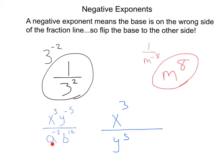In the denominator, we have a to the negative 2. That's a negative exponent, so we'll flip it and change it to positive. And we have b to the 12th. That's already positive, so we'll leave it right where it is.